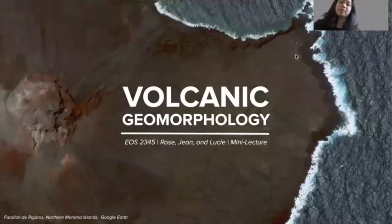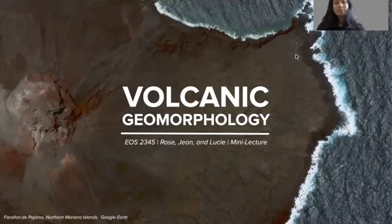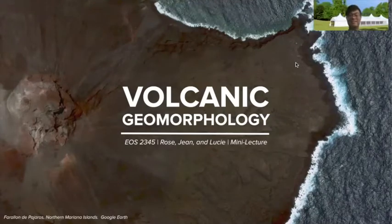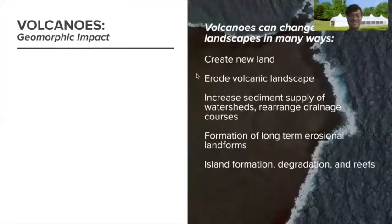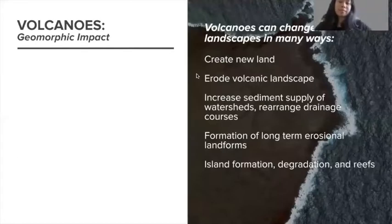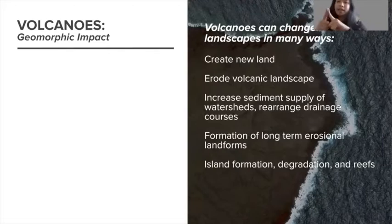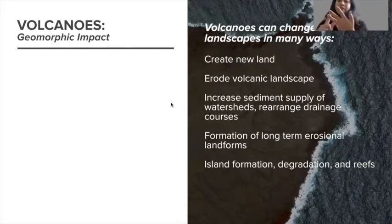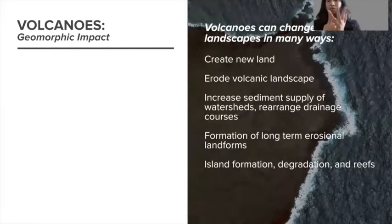We are going to talk about volcanic geomorphology. I'm Rose. I'm Jaune. And I'm Lucy. Some examples of how volcanoes impact surrounding landscapes: they can create new land, erode existing land, deposit sediments in watersheds, and affect the erosional landforms and long-term evolution.